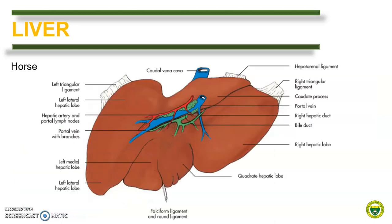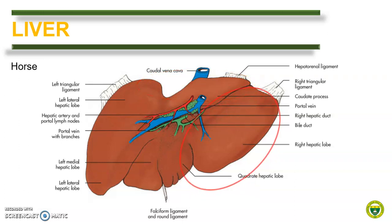In horse, the same as with the pig, the papillary process of the caudate lobe is missing. In addition, the right hepatic lobe is not divided into lateral and medial sublobes. Interestingly, horses lack a gallbladder.